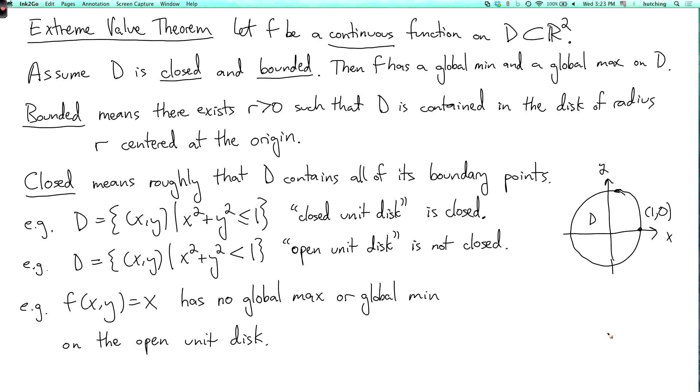It attains values slightly less than 1 and arbitrarily close. For example, you could take 0.999999 comma 0, where f is 0.999999. But for any point like this, you can make f a little bigger with another point in the open unit disk. Like we could just add more nines. We can always get closer to 1 without ever getting there.